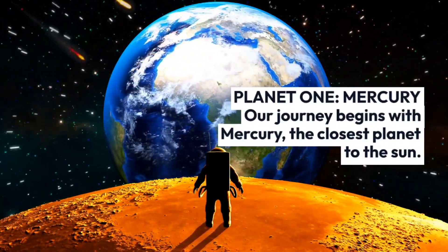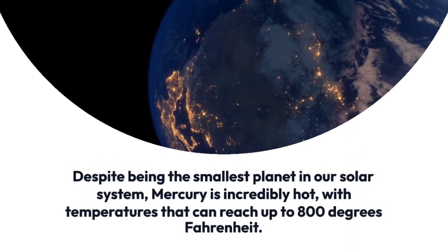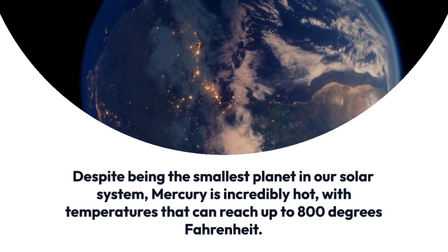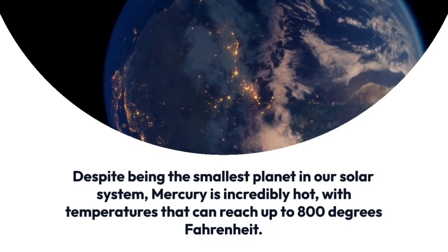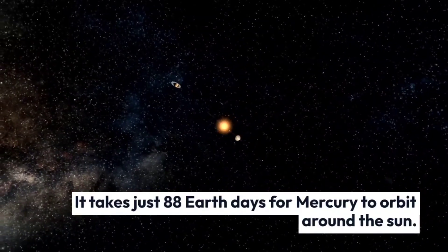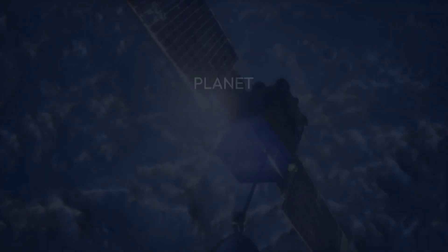Planet 1: Mercury. Our journey begins with Mercury, the closest planet to the sun. Despite being the smallest planet in our solar system, Mercury is incredibly hot, with temperatures that can reach up to 800 degrees Fahrenheit. It takes just 88 Earth days for Mercury to orbit around the sun.